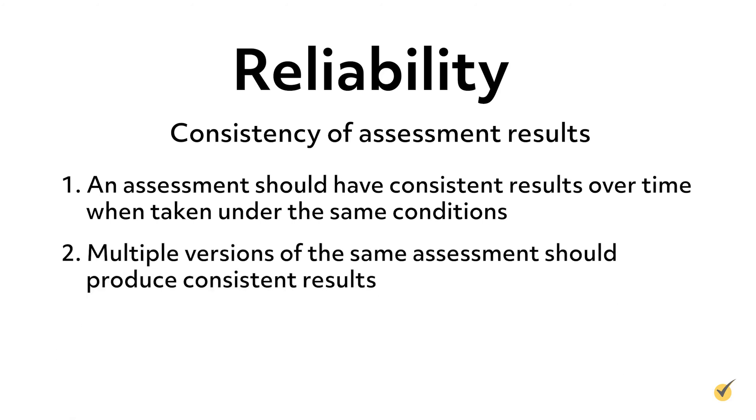Next, multiple versions of the same assessment should produce consistent results. For example, some tests contain question banks, where multiple questions are created to assess the same knowledge or skill. Test takers may receive different questions depending on which ones are randomly selected. Other tests have multiple versions, such as version A and version B, with different versions given to different students or at different times. If a student takes version A of a test one day and version B of the same test on another day under similar conditions, the results should be about the same.